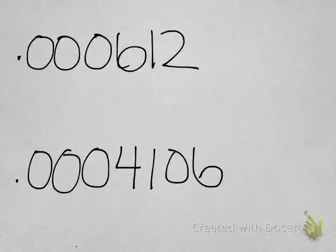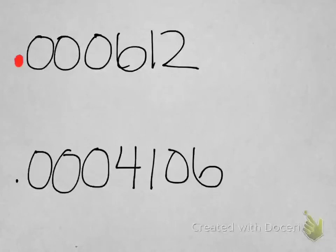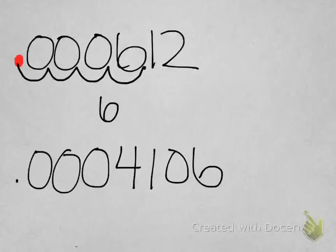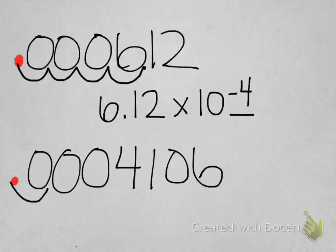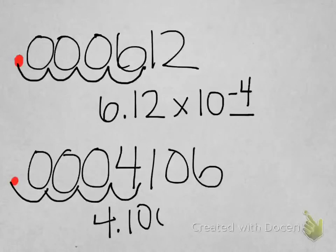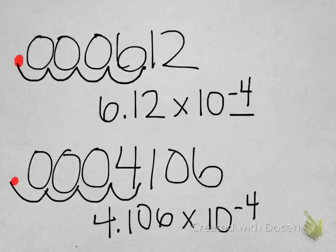Now for very small numbers, the decimal is already to the left of the number. The same rule applies — find a single digit one through nine to the left of the decimal. Count the spaces: one, two, three, four — giving 6.12 × 10⁻⁴. For the second example, count again: one, two, three, four — giving 4.106 × 10⁻⁴.